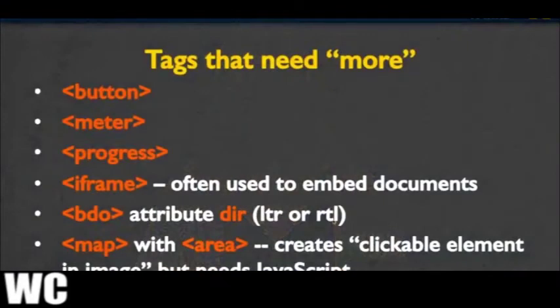There are other tags that people use quite often that you may see when looking at their pages. The issue with these tags is that they need more - it's really unusual to use them unless you're also incorporating JavaScript or other elements you probably don't know yet. These include the button, meter, progress, iframe, BDO - which stands for bi-directional orientation - and the map attribute along with area. People really like these, but they tend to need JavaScript. So I'm going to show you a quick example without the fancy add-ons, since right now we're just learning these tags.